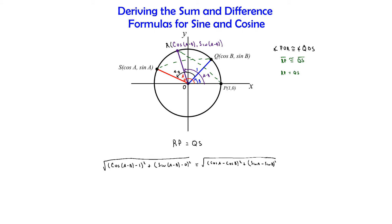We are going to use the distance formula between those two points and set them equal to each other. I've used the distance formula to find the distance from point R, which is (cos(A−B), sin(A−B)), to point P, which is (1, 0). So we have the square root of (cos(A−B) − 1) squared plus (sin(A−B) − 0) squared. That equals QS: Q is (cos B, sin B) and S is (cos A, sin A), so we have the square root of (cos A − cos B) squared plus (sin A − sin B) squared.